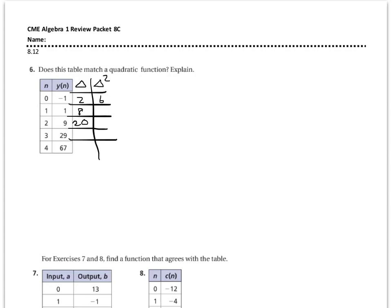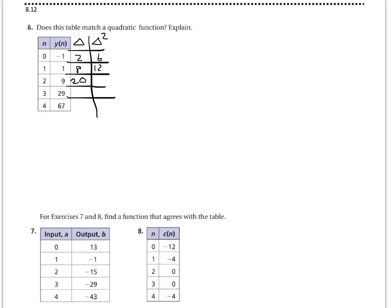The next difference is 12, and so on. The second delta is not constant. Therefore, it is a function, but not a quadratic function.